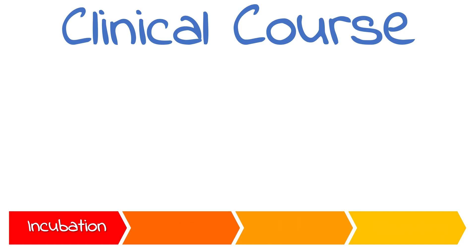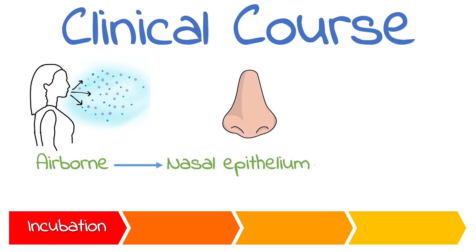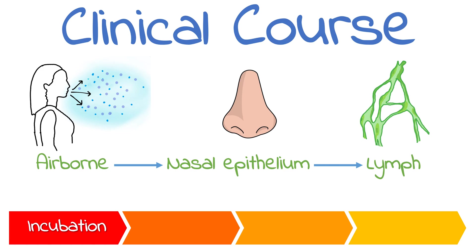Let's talk about the incubation period first. Measles is a highly infectious airborne disease and it's spread via droplets. The virus infects epithelial cells of the nose and then distributes into regional lymph nodes. During this time the infected person is asymptomatic. In general, it's said that measles has an incubation period of around 10 days.